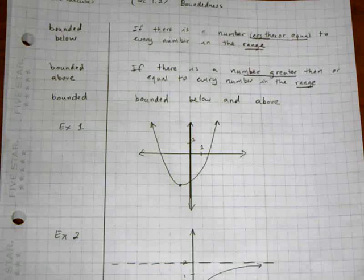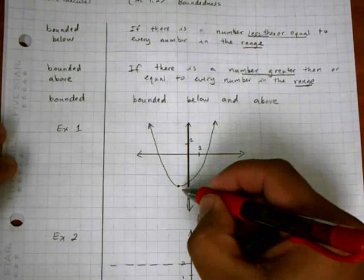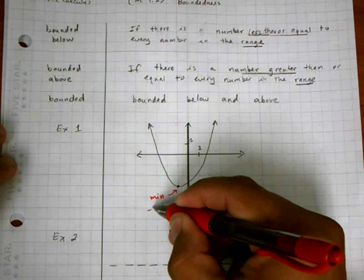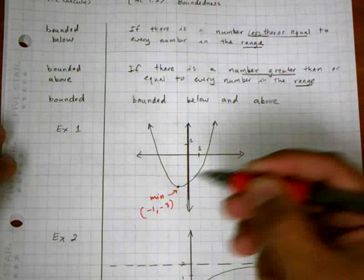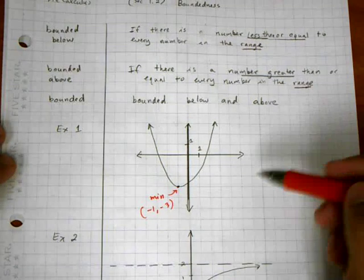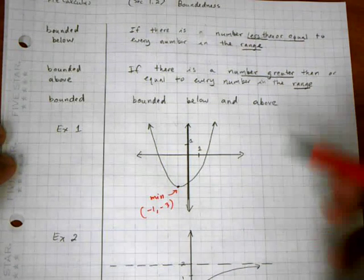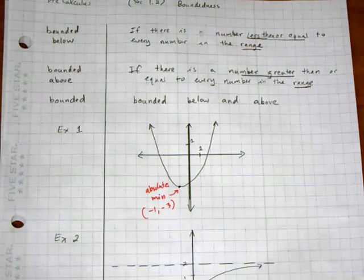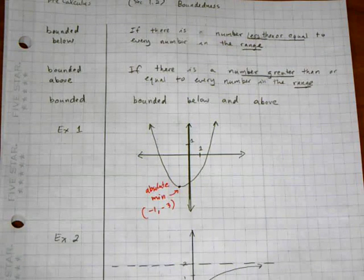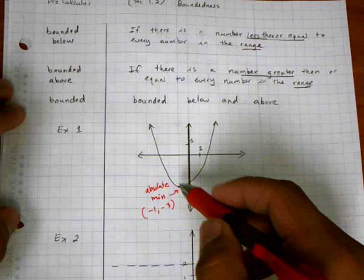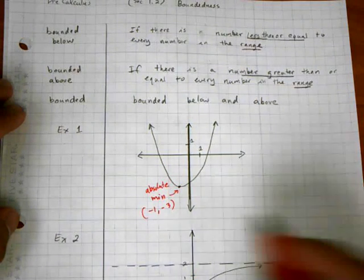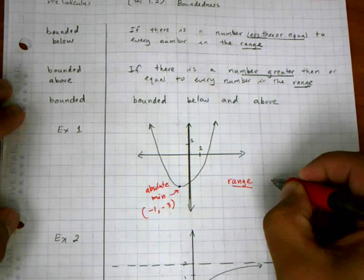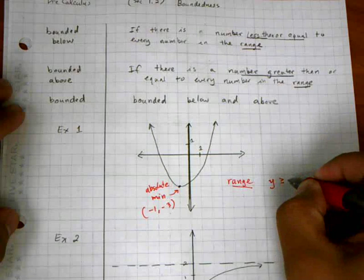In example one I have a parabola with a minimum at negative one, negative three from the graph. This is actually an absolute minimum because nothing on the graph is lower than that point. It's helpful to ask ourselves what the range is — since no point is lower than negative three, no y-value is less than negative three.